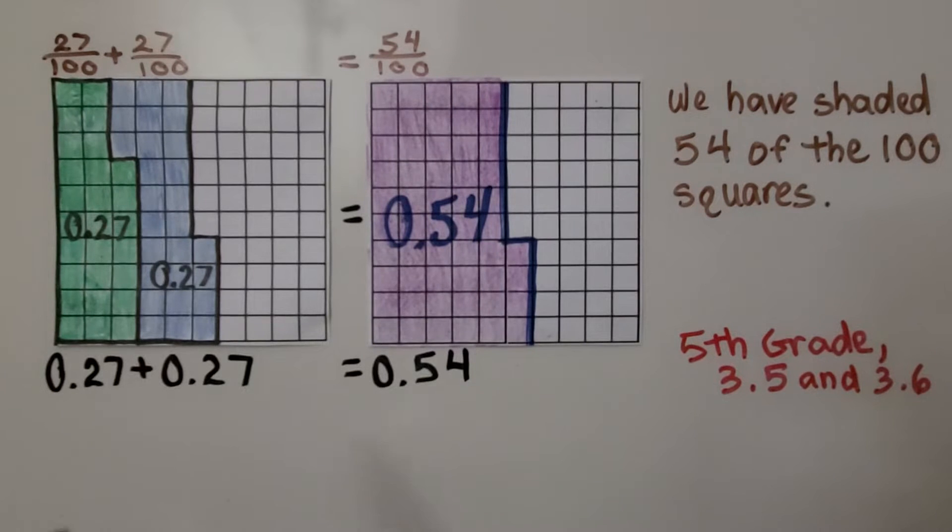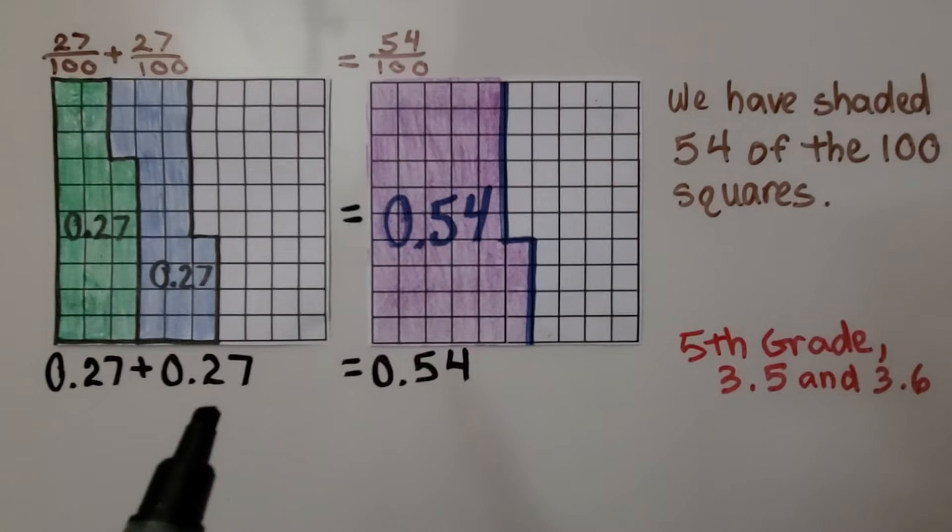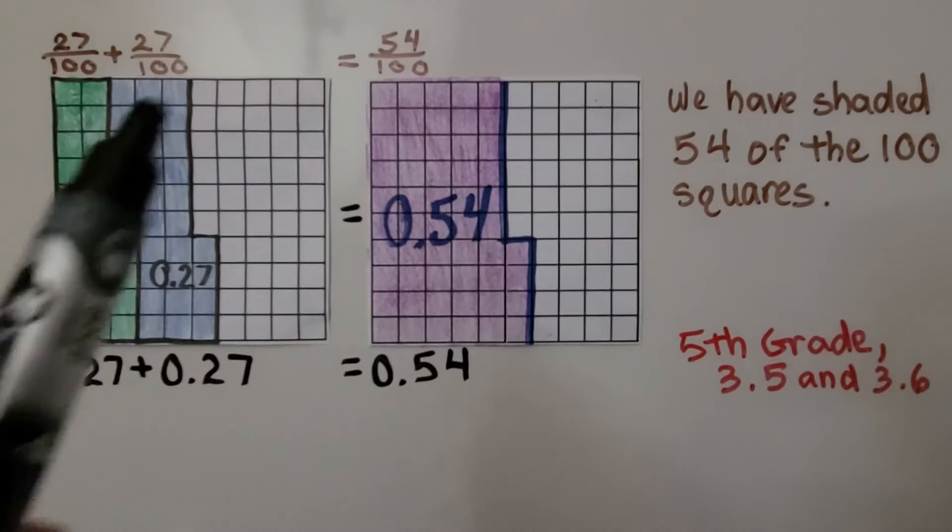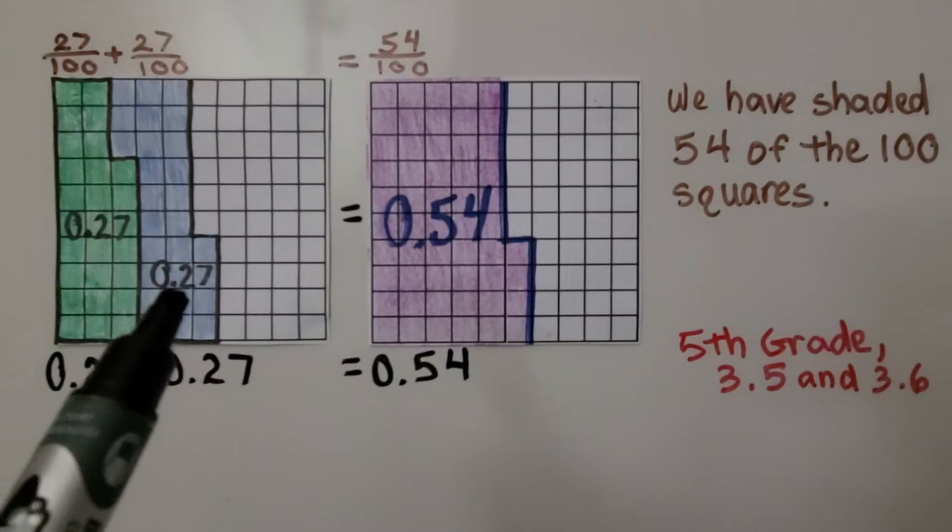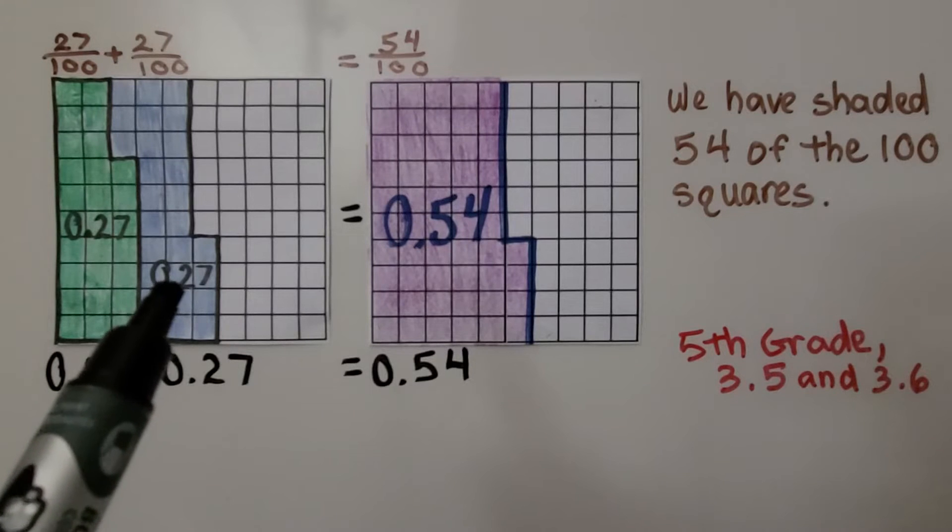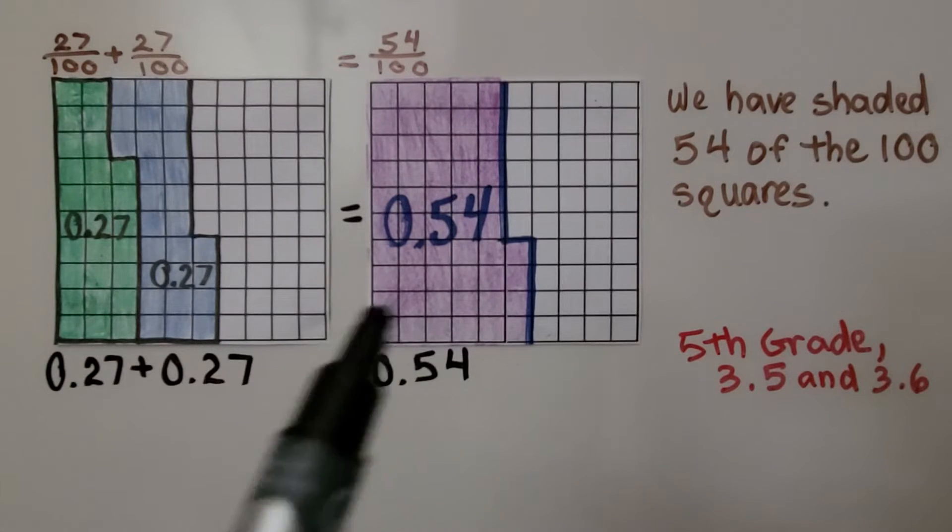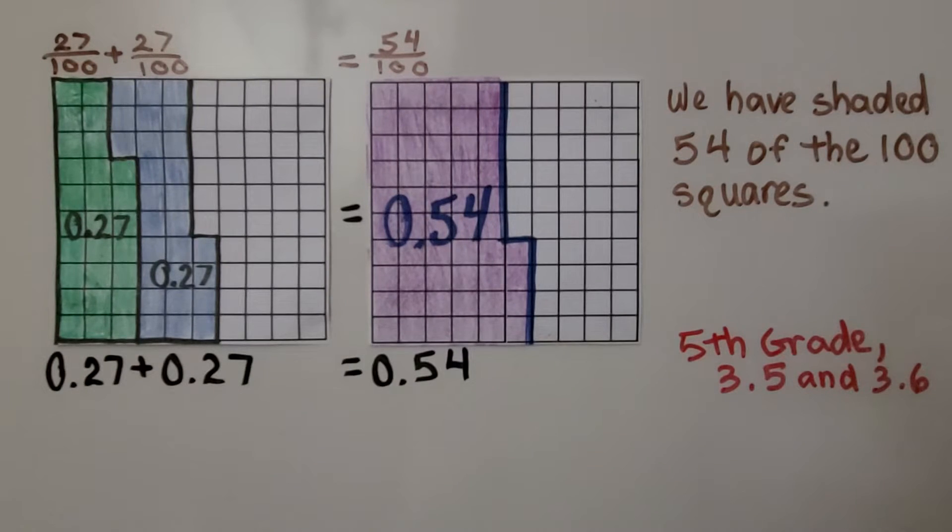To model adding 27 hundredths plus 27 hundredths, we have 100 squares here. We shade in 27 of them, then we shade in another 27 of them. It's equal to 54 hundredths. We've shaded 54 of the 100 squares.